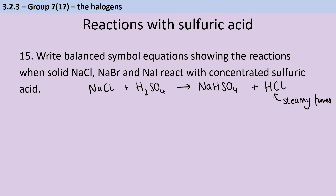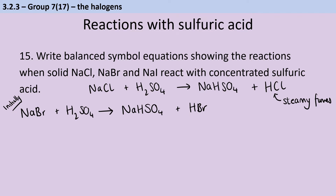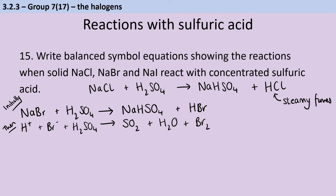For sodium bromide, we have two reactions. In the initial reaction, sodium bromide reacts with sulfuric acid to produce sodium hydrogen sulfate and hydrogen bromide, again with steamy fumes. But those bromide ions are a better reducing agent than chloride ions, so they can reduce the sulfur in the sulfuric acid. In the second reaction, we produce sulfur dioxide and also bromine, seen as brown fumes.